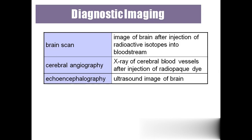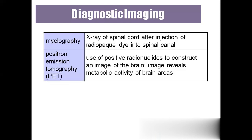'Echoencephalography' is nothing but an ultrasound of the brain — very similar to the ultrasound taken during pregnancy, but here the ultrasound is used to check the brain. 'Myelography' is taking an X-ray of the spinal cord after injecting a radio-opaque dye. In most nervous system X-rays they inject the radio-opaque dye, otherwise the organs cannot be seen properly.